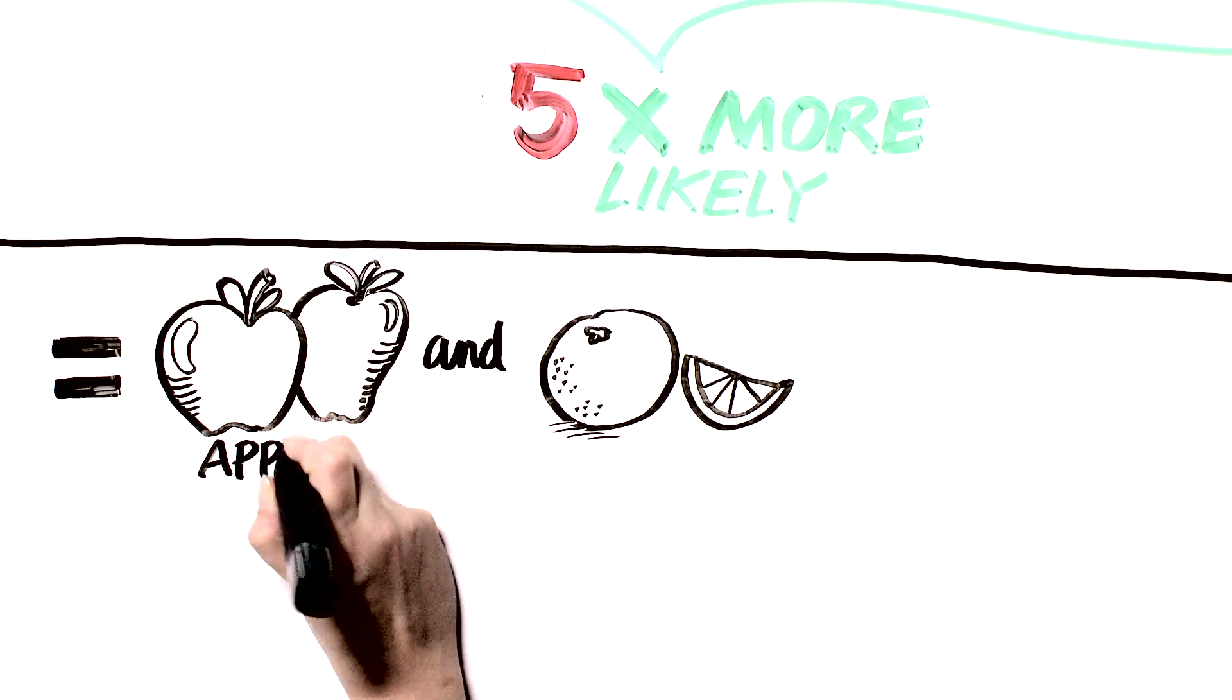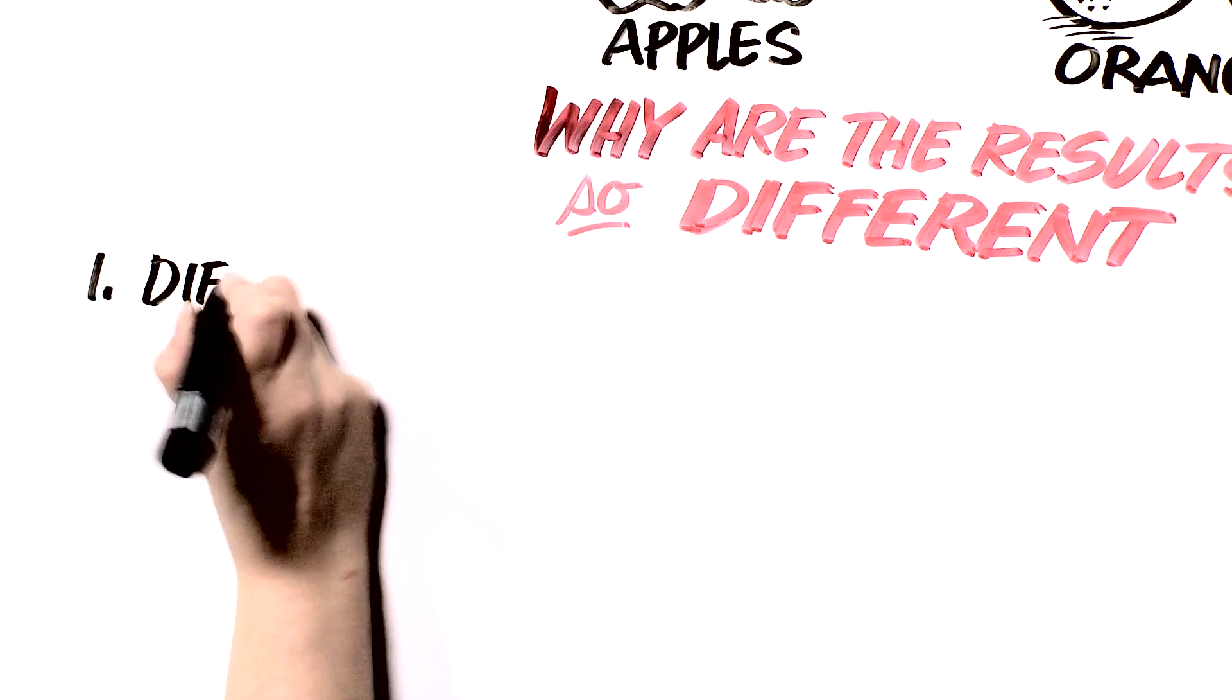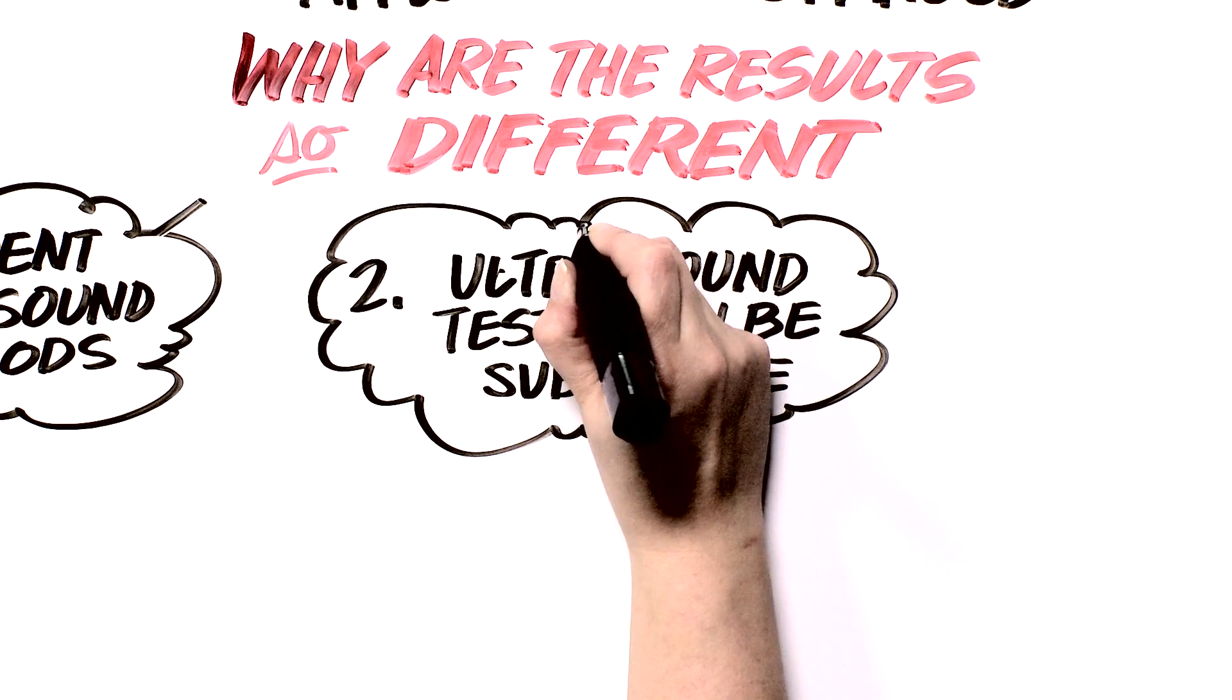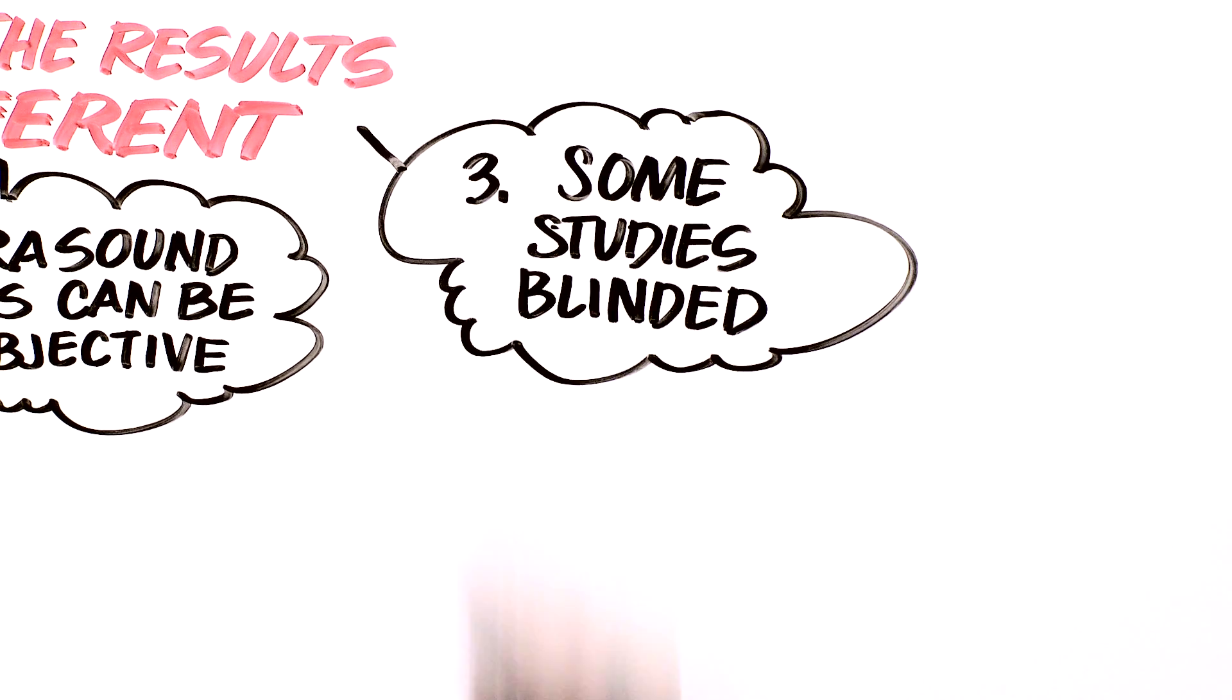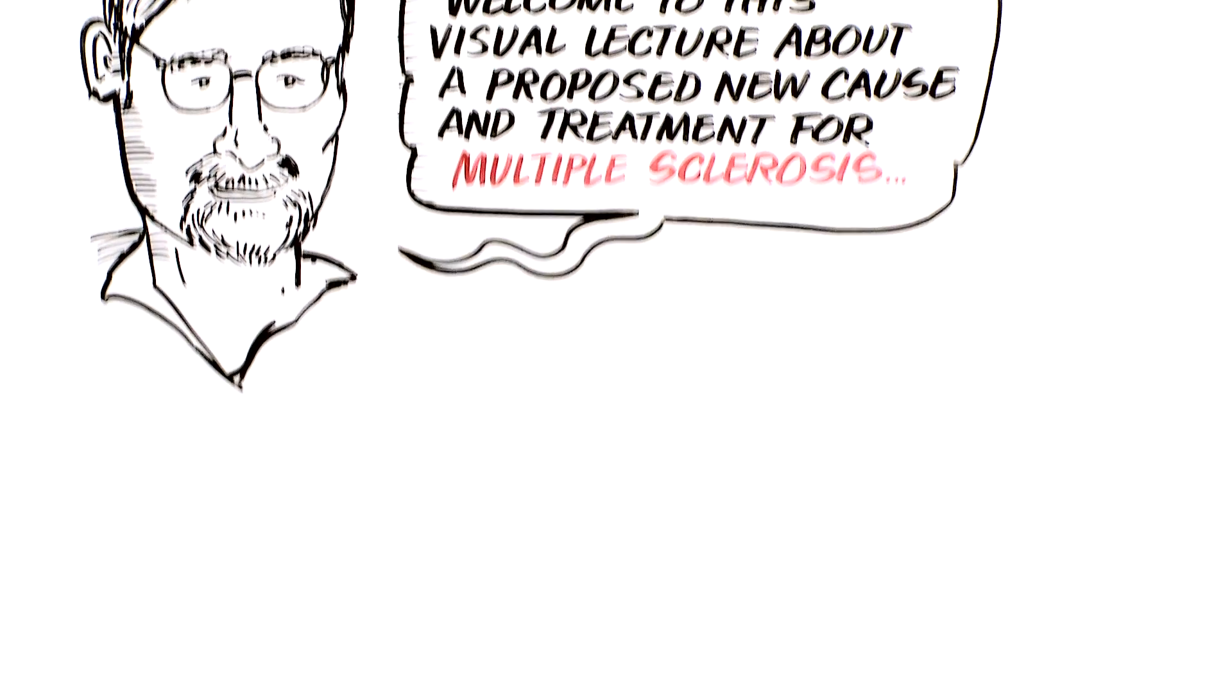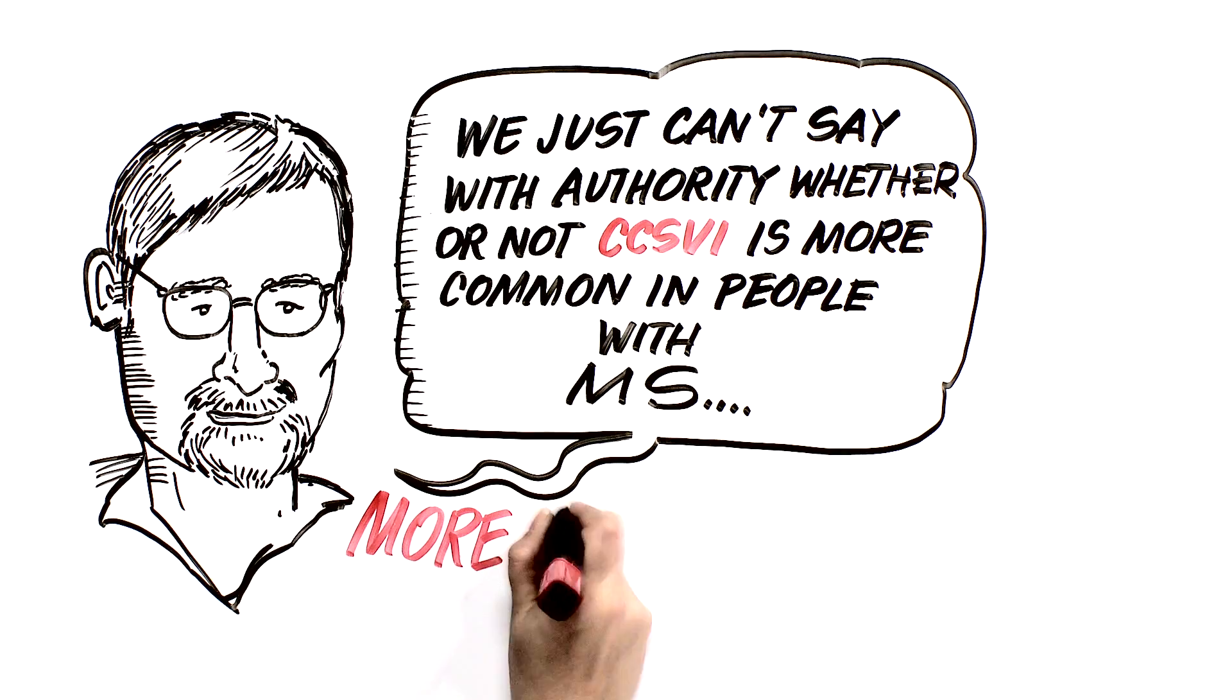When results differ to this extent, apples and oranges, so to speak, it makes more sense to focus on trying to understand why the results are so different. We tried to think of the potential causes of the different results and considered three possible factors. Number one, CCSVI is a newly described entity. Different groups might be using different ultrasound methods to assess the veins. Number two, doing an ultrasound test can be quite subjective. Minor changes in pressure on the skin or breathing patterns of the person being examined can affect the results, as can the bias of the person performing the test itself. And number three, some of the ten studies were blinded, meaning that the person doing the ultrasound didn't know whether or not the person being examined had MS, and some were not blinded. Unfortunately, none of the studies that said they were unblinded reported on the success of blinding. In the end, unfortunately, we couldn't explain the reason for the differences in results. This means that our systematic review of ultrasound studies is inconclusive. Based on the research to date, we just can't say with authority whether or not CCSVI is more common in people with MS. More studies are needed.